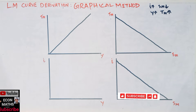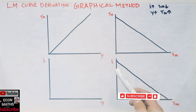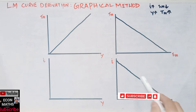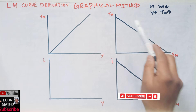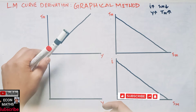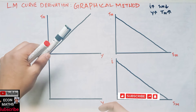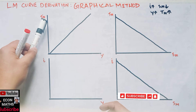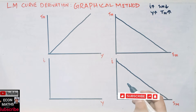To summarize: in the first graph, rate of interest and speculative demand for money have a negative relationship — if rate of interest increases, speculative demand for money decreases. In the second graph, we show the division of total money demand between transactional and speculative demand for money. In the third graph, transactional demand for money has a positive relationship with level of income. In the last quadrant, we will derive the LM curve.